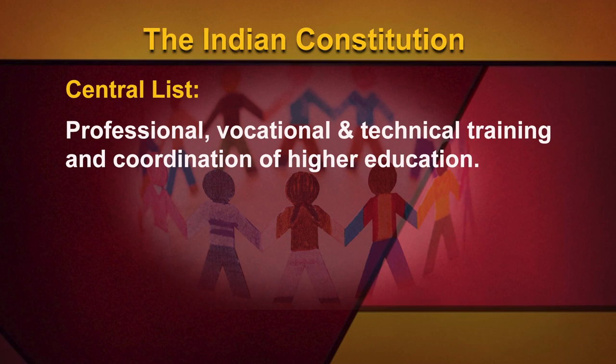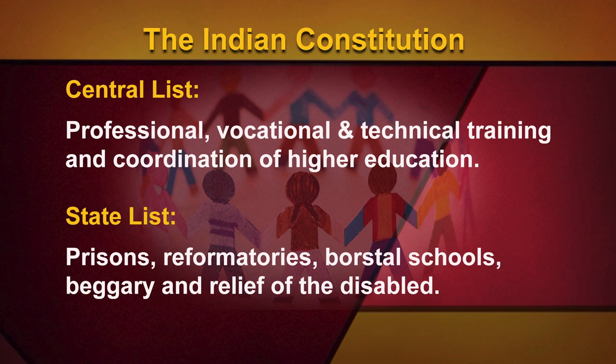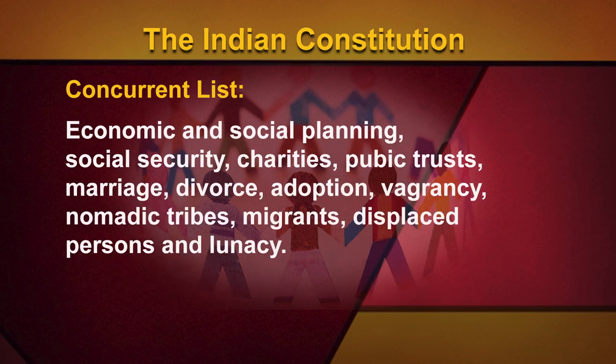Subjects under the central list include professional, vocational and technical training, and coordination of higher education. Those under the state list include prisons, reformatories, borstal schools, beggary, and relief of the disabled. Some subjects under the concurrent list include economic and social planning, social security, charities, public trusts, marriage, divorce, adoption, vagrancy, nomadic tribes, migrants, displaced persons, and lunacy.